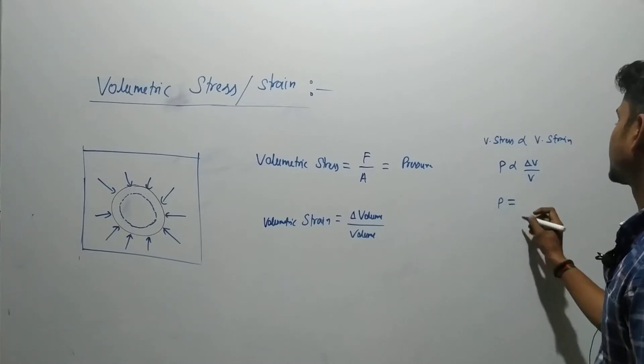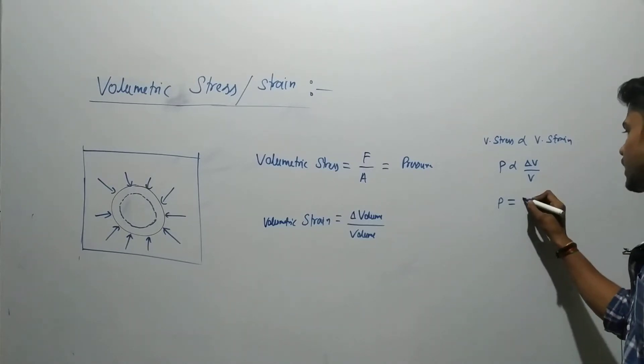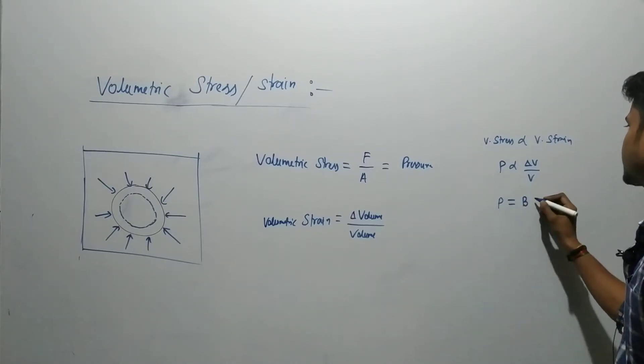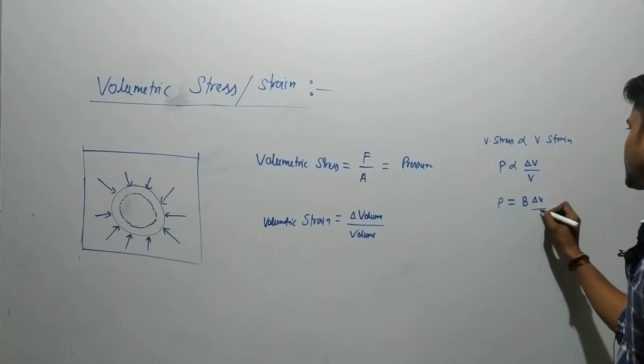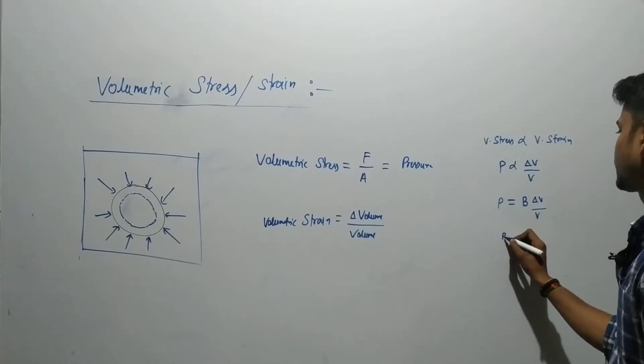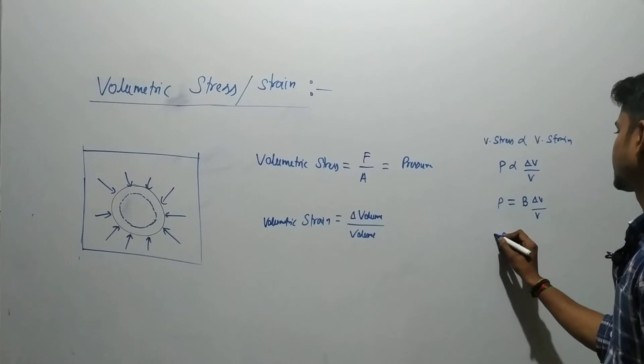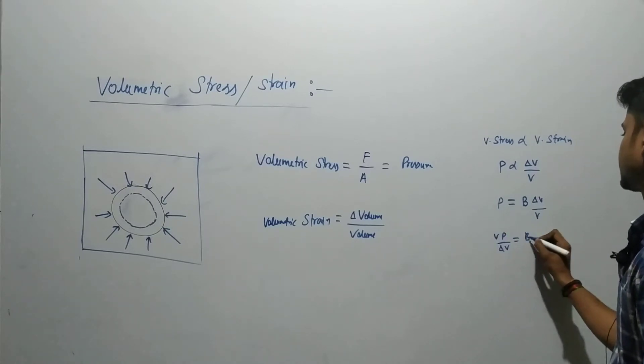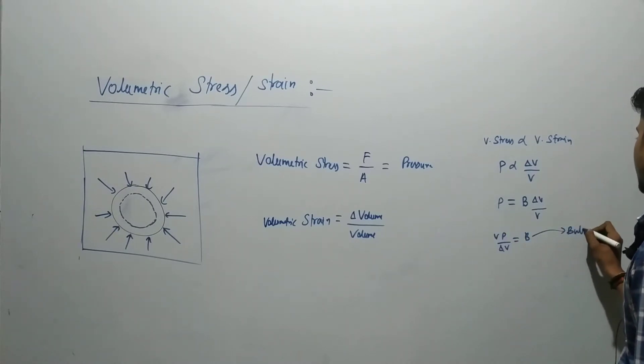So the proportionality constant this time will be the bulk modulus B, which again depends on your material. So this is your bulk modulus.